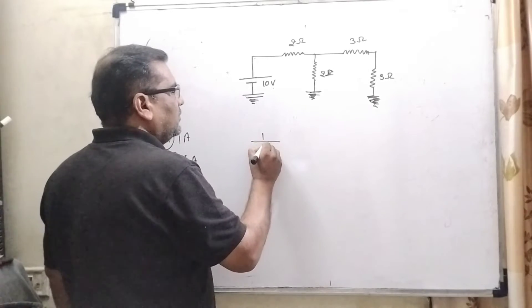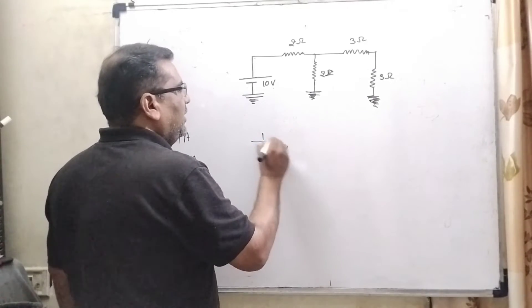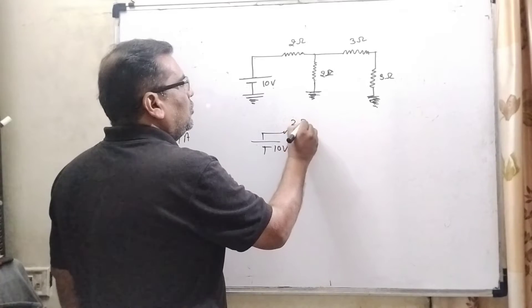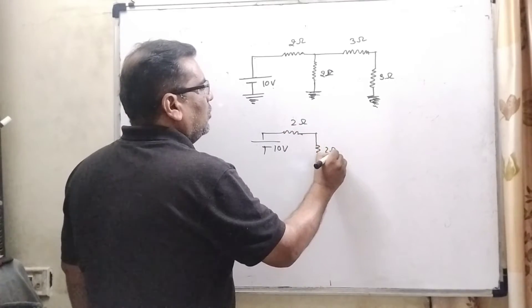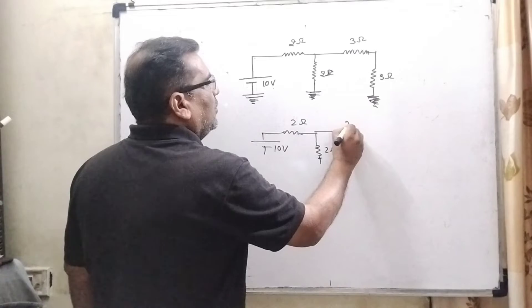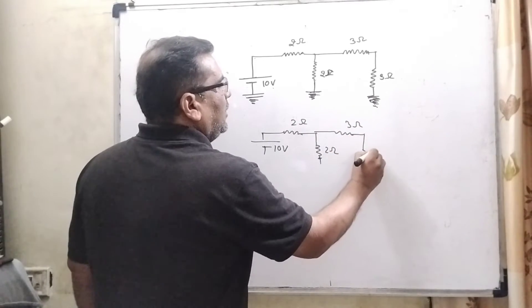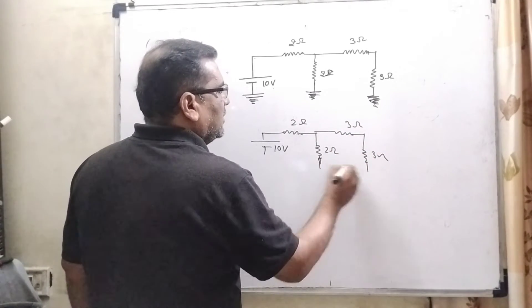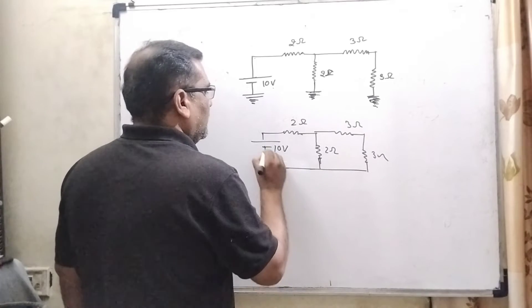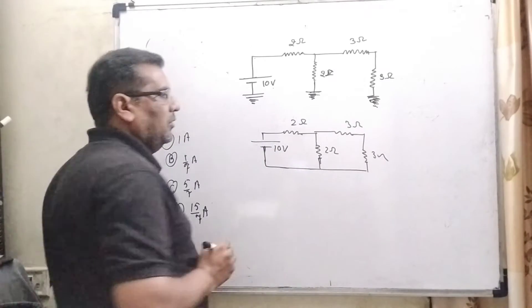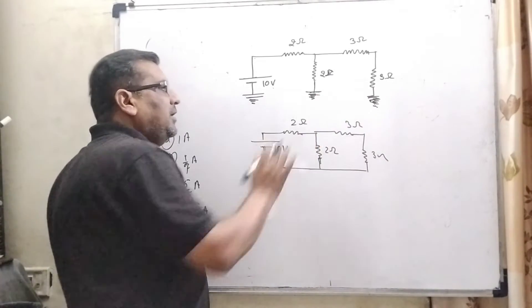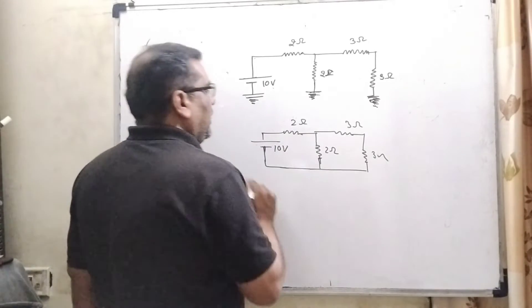So therefore, it is 10 volt battery, 2 ohm, here 2 ohm, 3 ohm, 3 ohm and all the terminals connected with negative terminals because all the three ends are grounded.